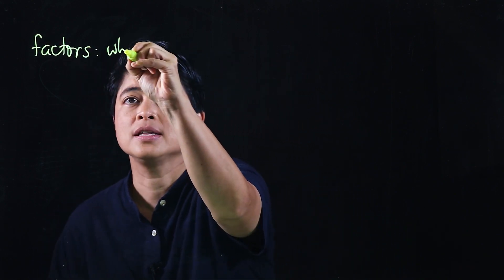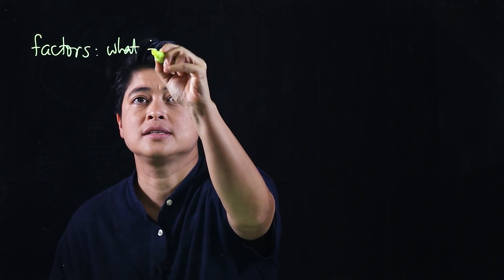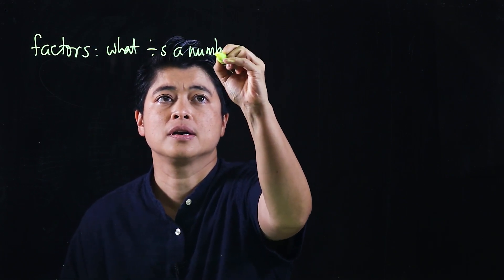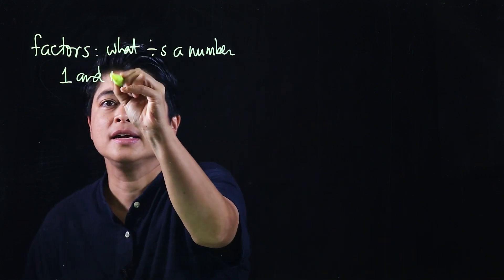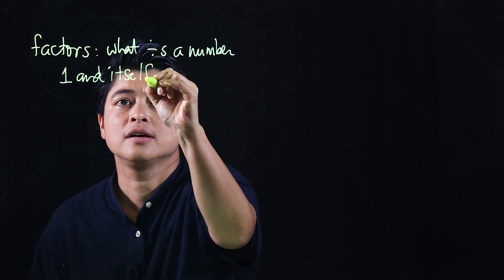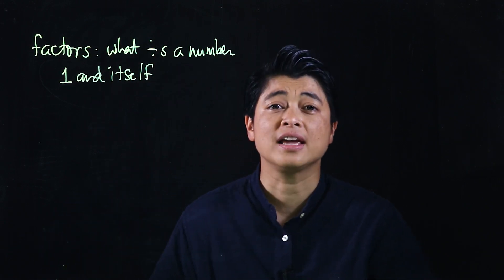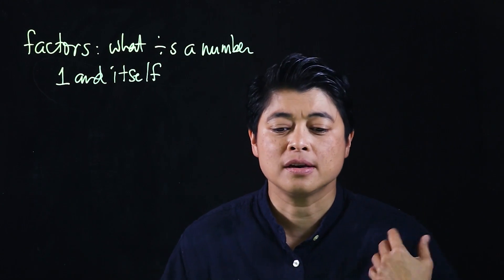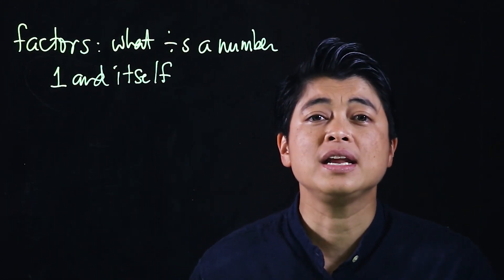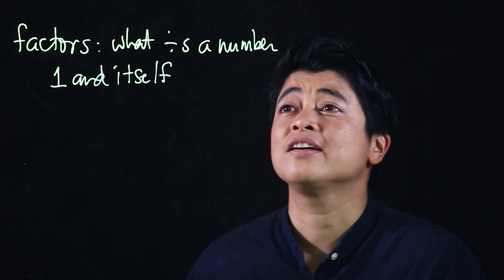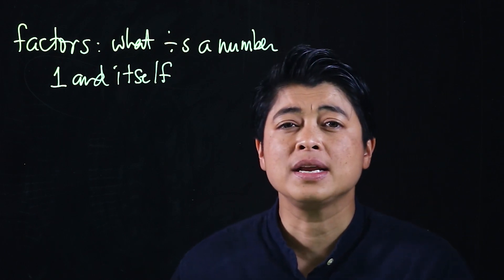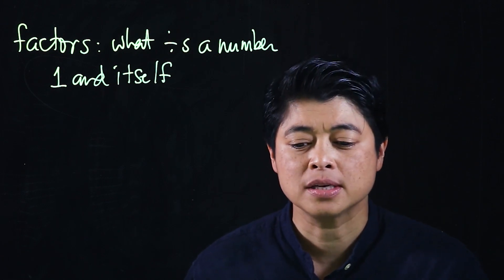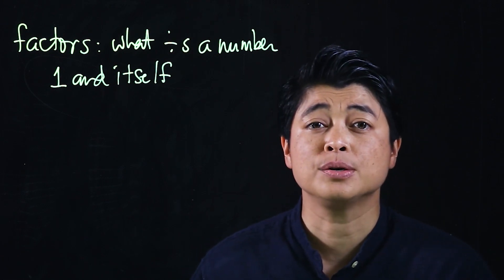Factors are what divides a number. Always 1 and the number itself are the easiest factors of any given number. To find all the other factors, we need to see what divides the given number, which means we need to know simple rules about divisibility.